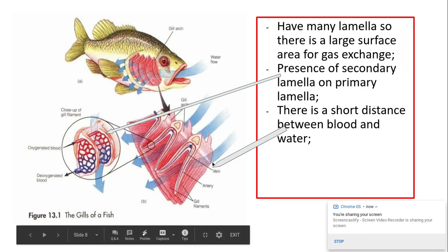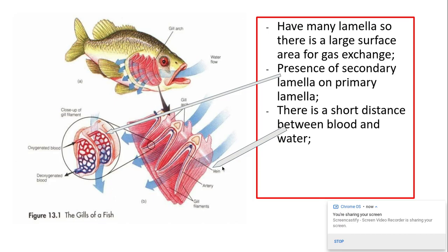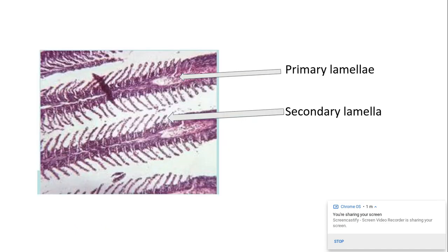There's also a very good blood supply to the gills. You can see here the artery and the veins here that are labeled in the diagram. This creates very short diffusion distance between the blood and the water and it also helps to maintain the concentration gradient for faster diffusion.